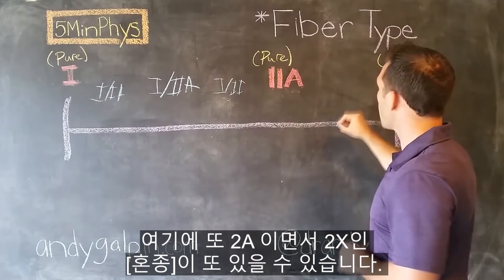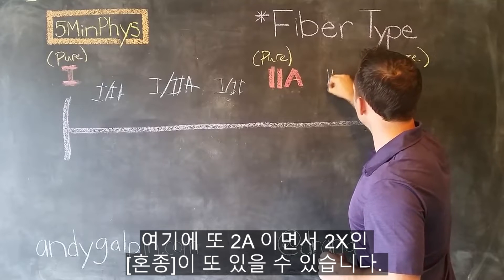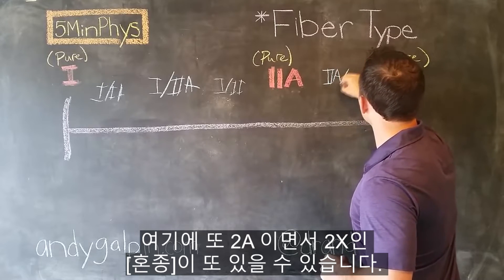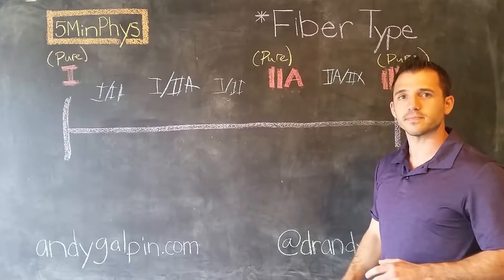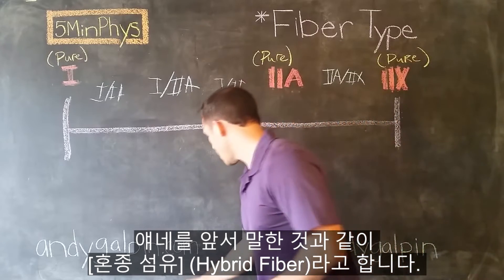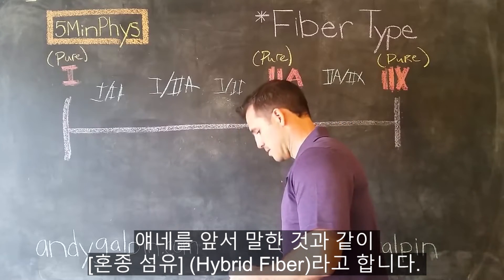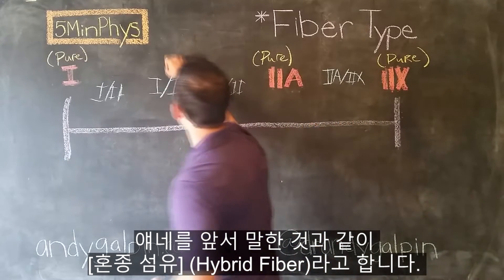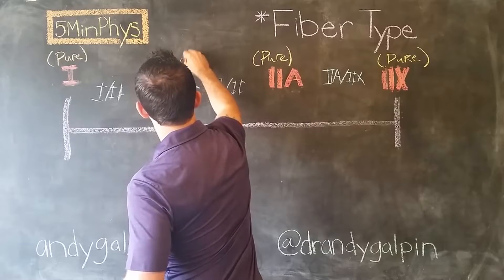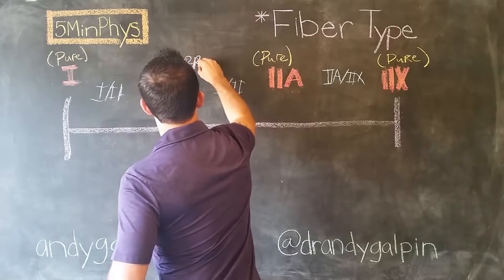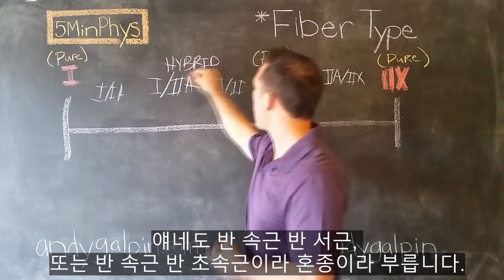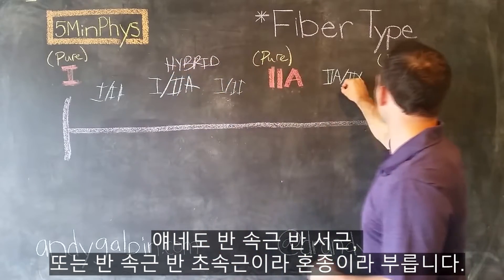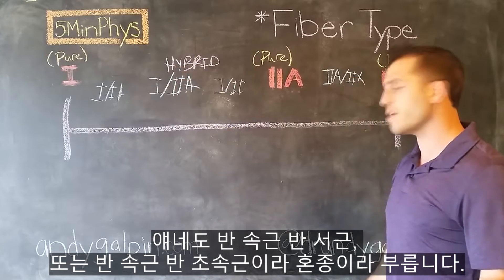We could have another hybrid over here, which could be a 2A and partially a 2X. We would call these hybrid fibers. Just like your automobile that's half gas, half electric, these things are half fast, half slow, or half fast, half mega fast, and so we call them hybrids.